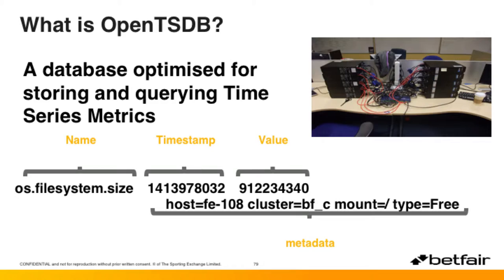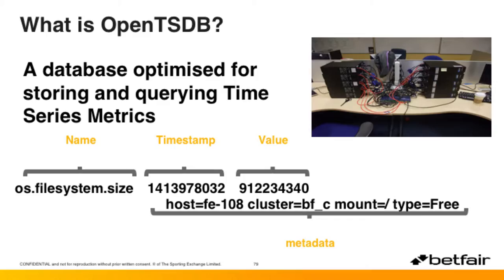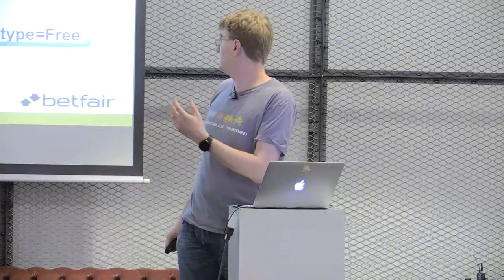In a nutshell — as you might imagine from the name, it's one of those inspired naming schemes the IT industry comes up with — it is a time series database: a database optimized for storing and querying time series metrics. In OpenTSDB's case, they look like this: you have the metric name, a Unix timestamp, the value for the metric, and then a set of additional tag and value pairs for more detailed analysis.